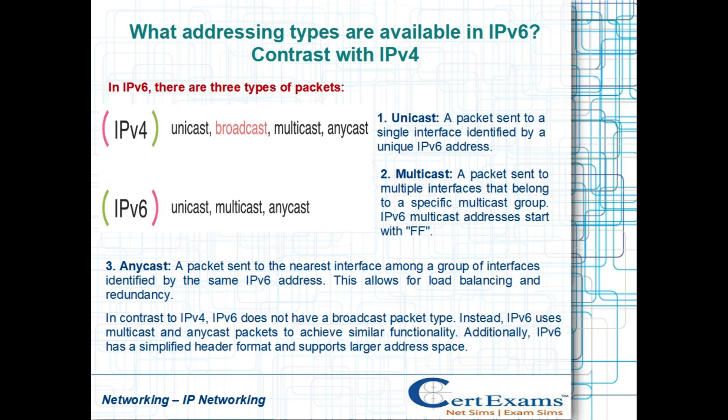In contrast to IPv4, IPv6 does not have a broadcast packet type. Instead, IPv6 uses multicast and anycast packets to achieve similar functionality. Additionally, IPv6 has a simplified header format and supports a larger address space.